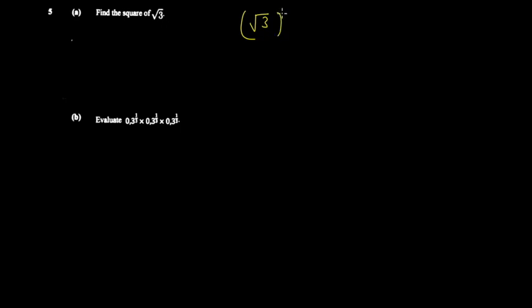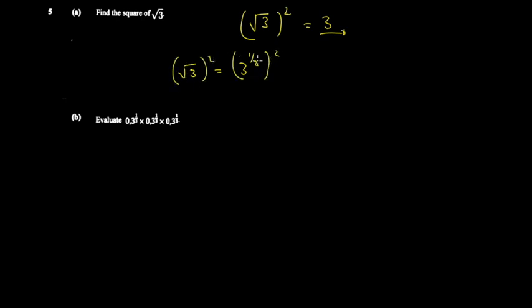Let's move on to question five. Part a asks us to find the square of square root of three — that's √3 squared. Whenever you square a square root, it goes away and you just get three. Another way to understand it: √3 means three to the power of one half. If you square that, you multiply the powers: one half times two equals one, giving you three to the power of one, which is simply three.